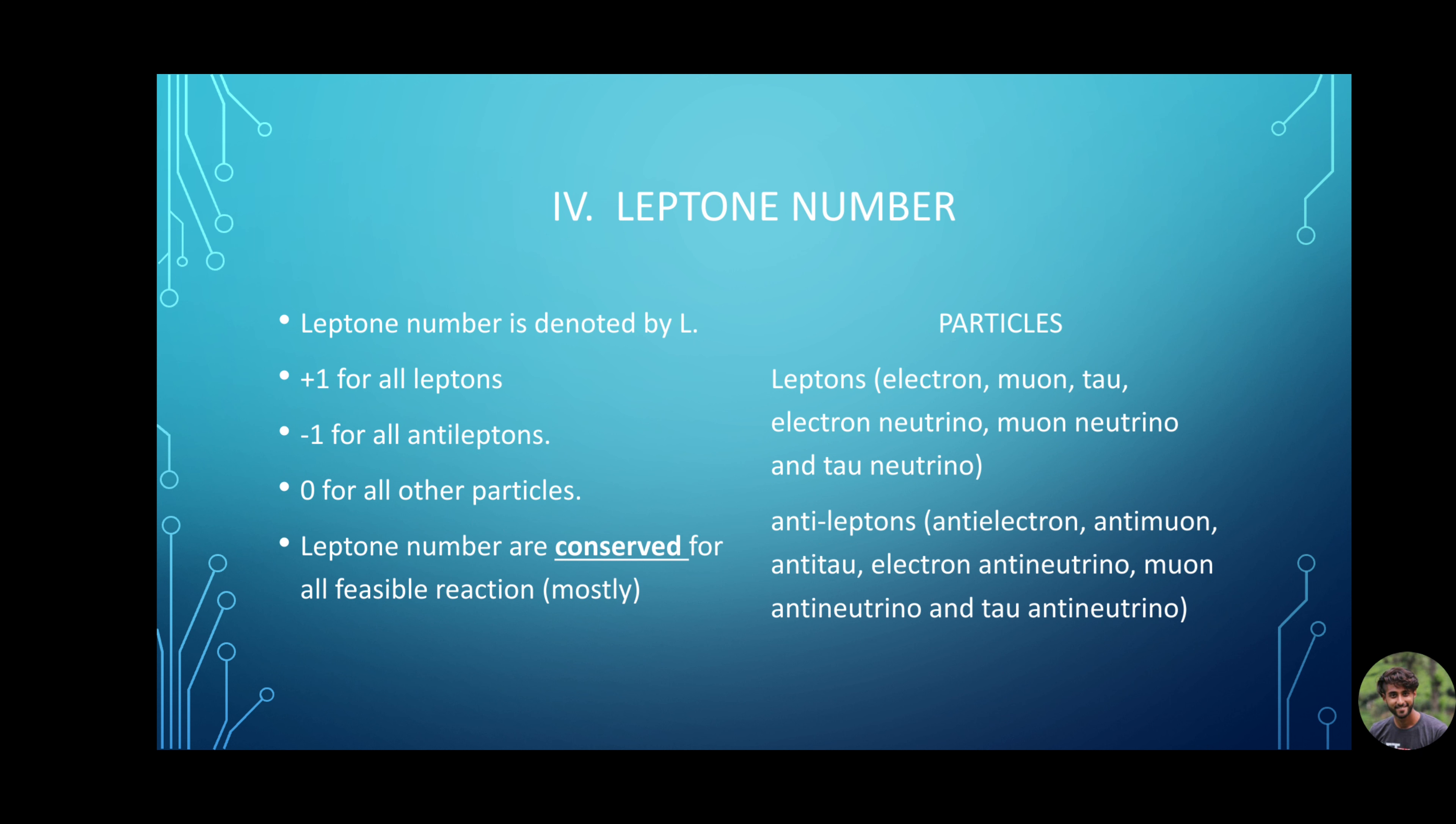Number 4. Lepton number L. There are only three possibilities for lepton number. That is positive 1, negative 1 or zero. For all leptons, that is electron, muon, tau, electron neutrino, muon neutrino, tau neutrino, lepton number is positive 1. For all anti-leptons, that is anti-electron or positron, anti-muon, anti-tau, electron anti-neutrino, muon anti-neutrino, and tau anti-neutrino, lepton number is negative 1. And finally, for all other particles, lepton number is zero. In order for all processes to be feasible, lepton number should be conserved.